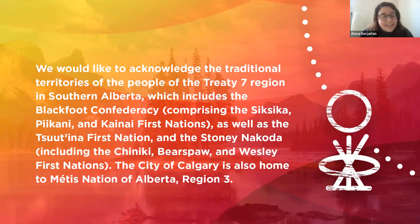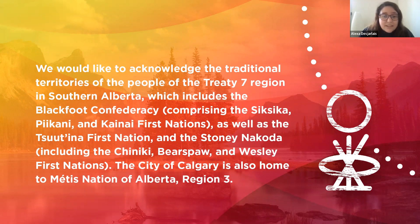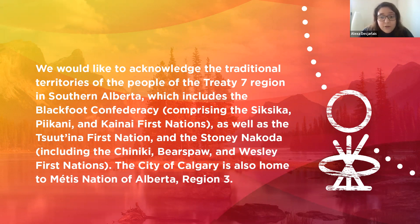We'd like to begin by acknowledging and paying tribute to the traditional territories of the peoples of Treaty 7, which includes the Blackfoot Confederacy, comprising the Siksika, Pekinai and Kainai First Nations, as well as the Tsutena First Nation and the Stony Nakoda, including the Chiniki, Bearspaw and Wesley First Nations. The city of Calgary is also home to Métis Nation of Alberta Region 3, and by the signing of Treaty 7 in 1877, the university recognizes that we are all treaty people. Now we'll pass it over to Sarah.